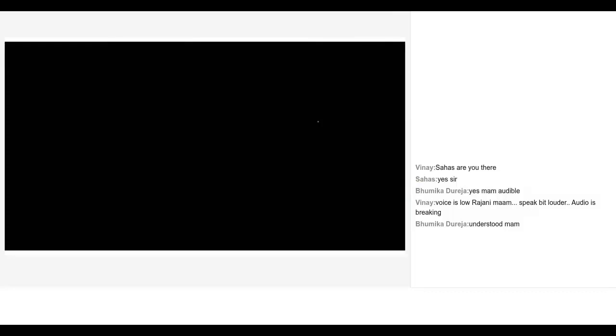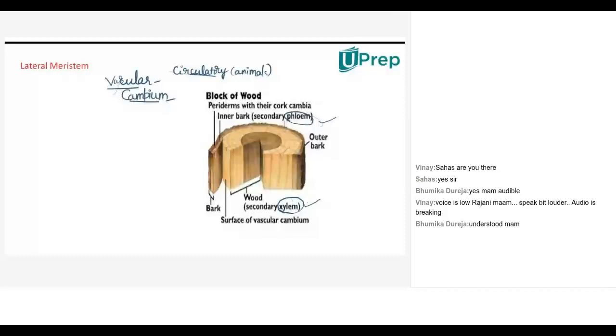What phloem will do? What xylem will do? Xylem is nothing but the one which will transport water and nutrients throughout the plant body, and phloem will transport only the prepared food materials throughout the plant body. So these are the two elements which will help in transport of various materials inside the body. Those are called vascular tissues.